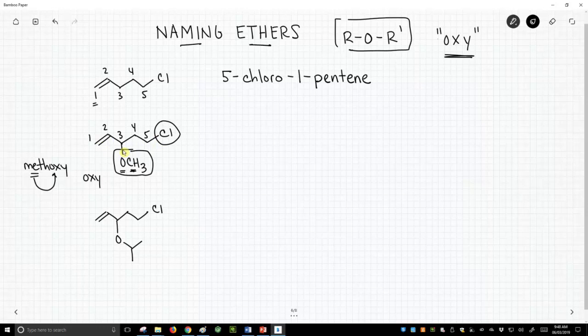So chloro-C comes before meth, so let's put that first: 5-chloro. Now in the three position, we have a methoxy group, and that is on our 1-pentene.